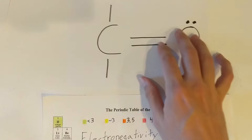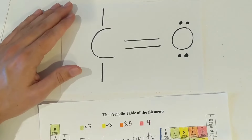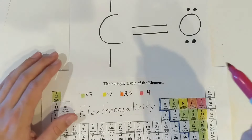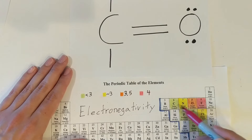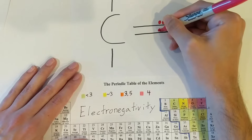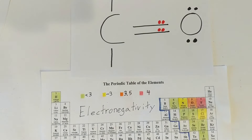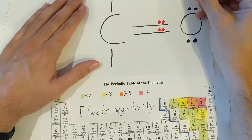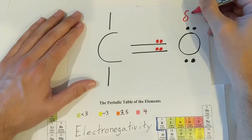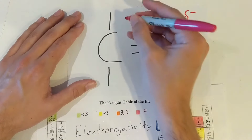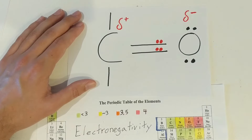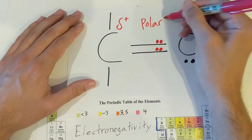Now let's look at carbon bonded to oxygen. Looking at their electronegativities: carbon is below three, and oxygen is up at 3.5. So the electrons are going to hang out closer to the oxygen side. Electrons have a negative charge, so this oxygen is going to have a partial negative charge, and our carbon — where electrons are farther away — will have a partial positive charge. So that would be a polar bond.